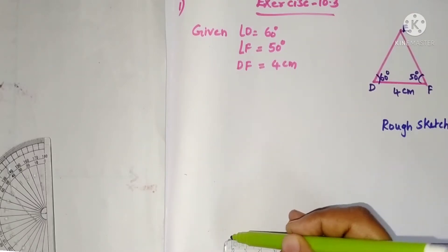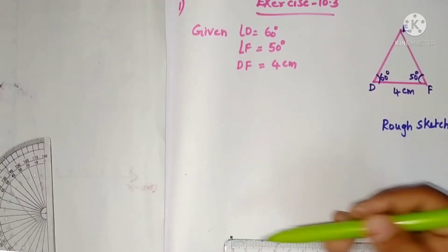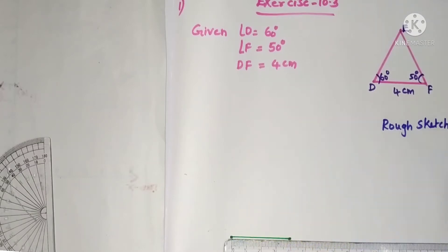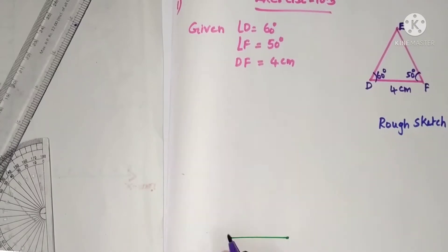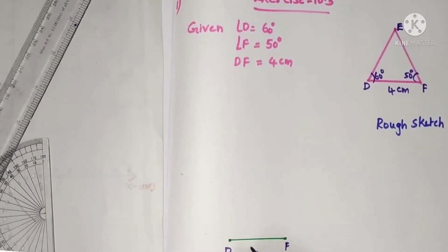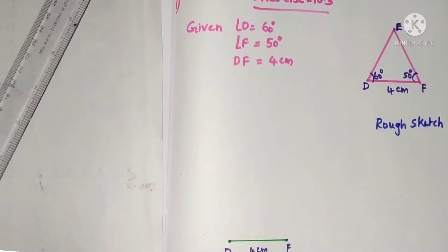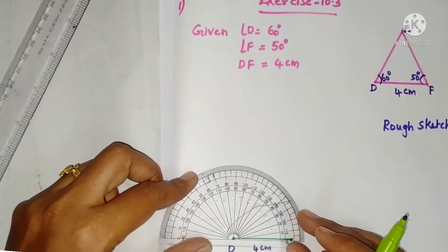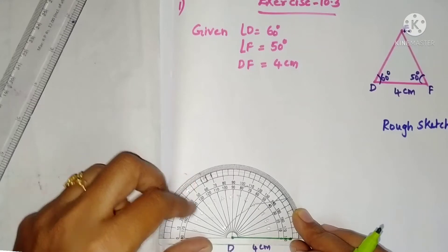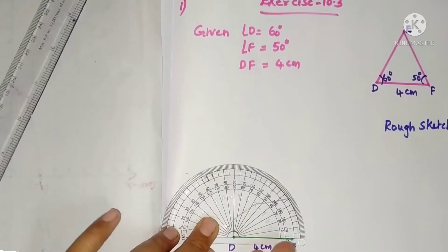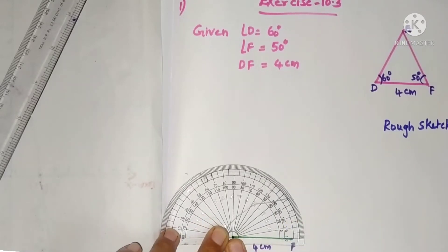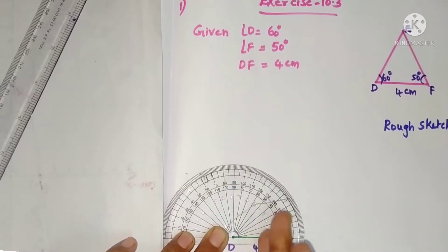Draw a line segment: one point at zero and another point at four, then join these two points. This is DF, 4 centimeters. Now, angle D is 60 degrees, so place the protractor on D. The angle is coming in this direction on the right side.